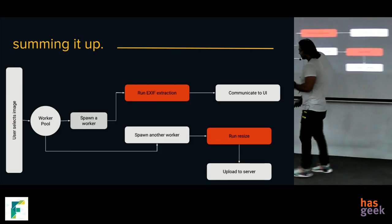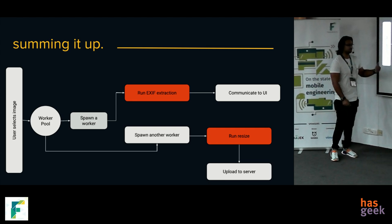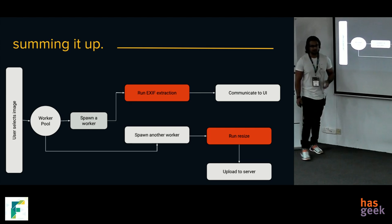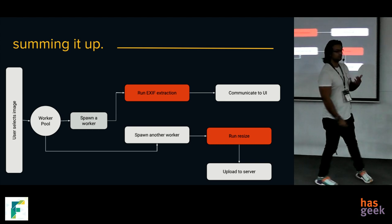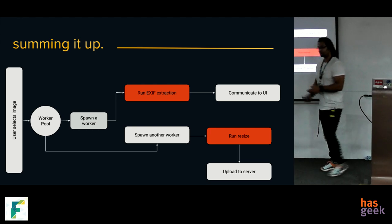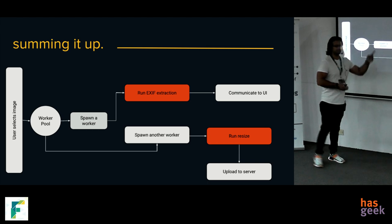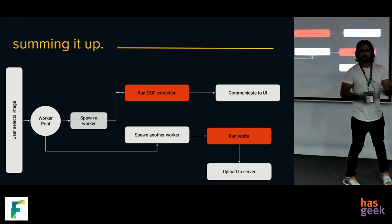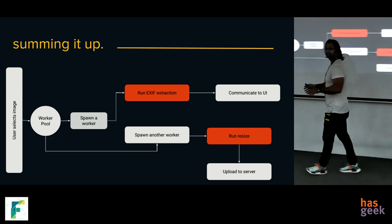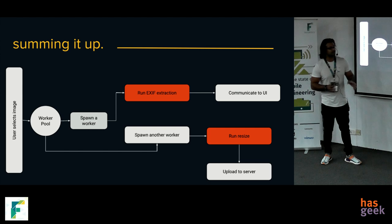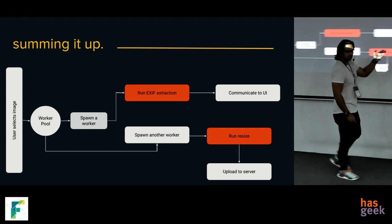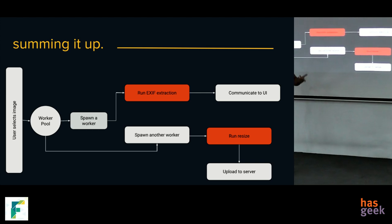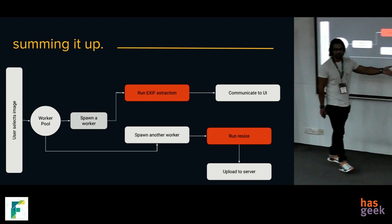Summing it up, our final architecture is: the user selects an image, we extract the array buffer, then pass it to a worker pool. To minimize worker instantiation cost, we created a pool where for each image we spawn two workers in parallel — one to run EXIF extraction and one to run resizing. These are heavy, order-n-squared loops that are not related to each other, so there's no reason to run them sequentially. Once EXIF extraction is done it communicates the orientation to the thumbnail component, and when resizing is done it communicates to the network utility to go ahead and upload.